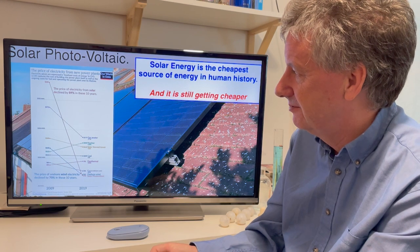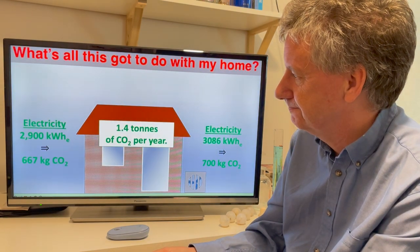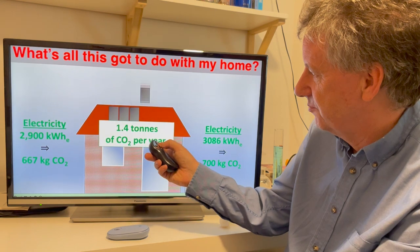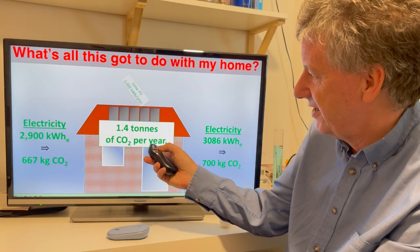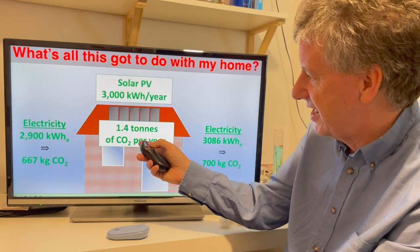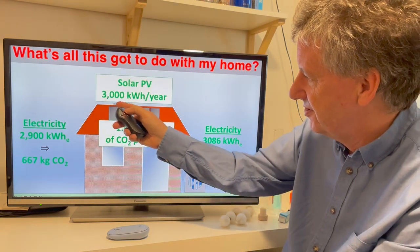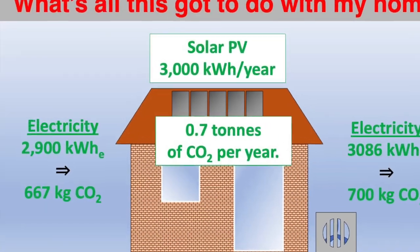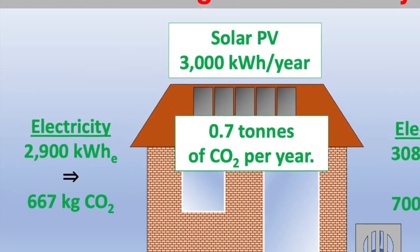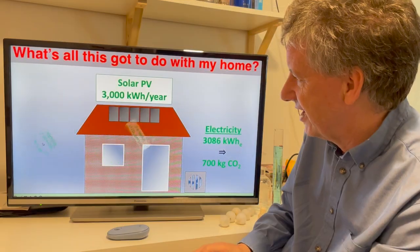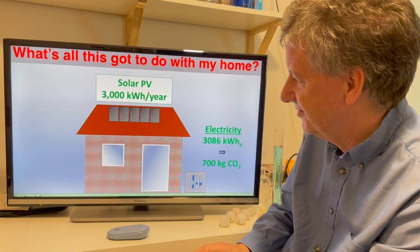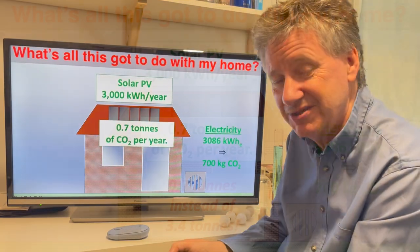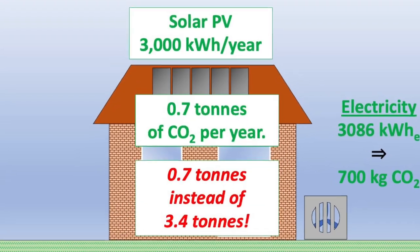On our house we generate about 3,500 units of electricity a year. A typical system generates around 3,000 kilowatt hours a year — and look, that's all the electricity we use, so we can just get rid of that electricity bill. Fantastic — we're down to 0.7 tons from what was three and a half tons.